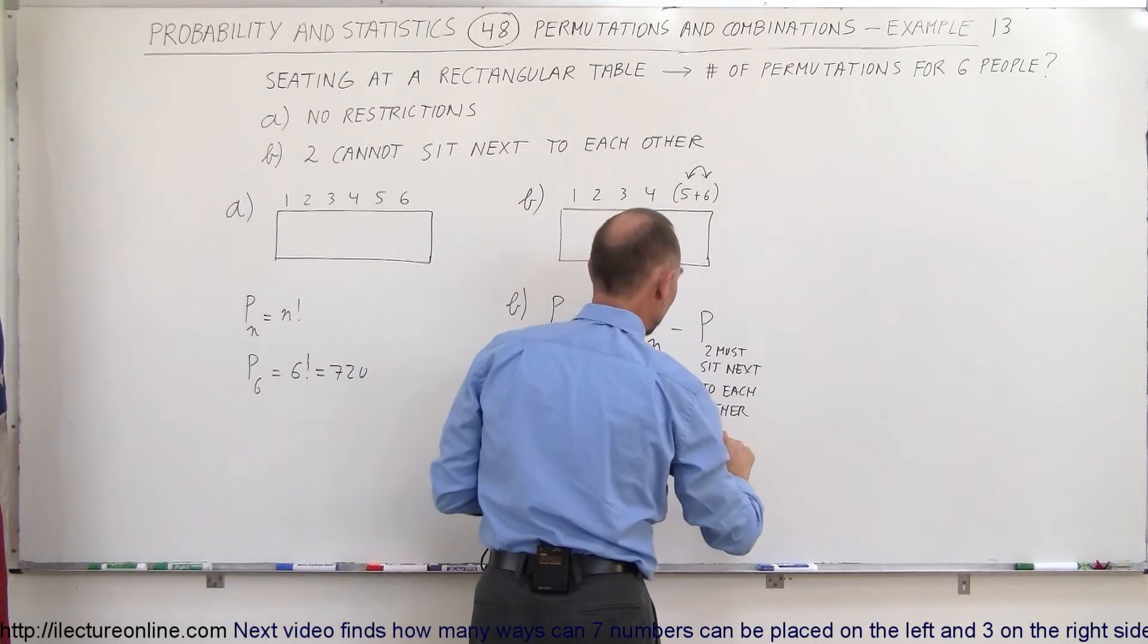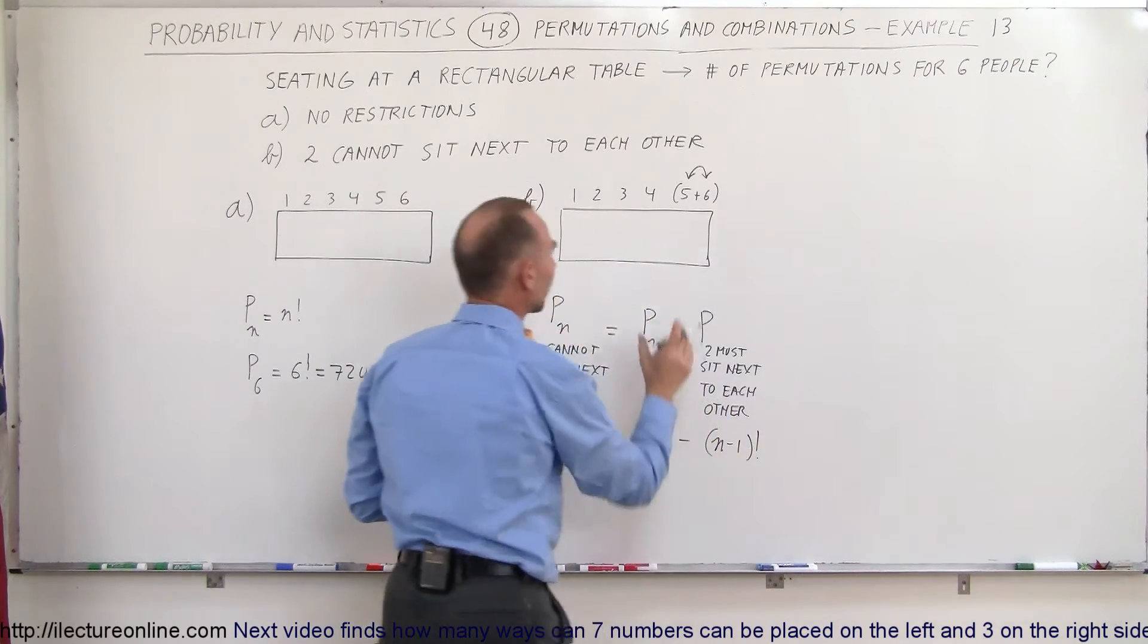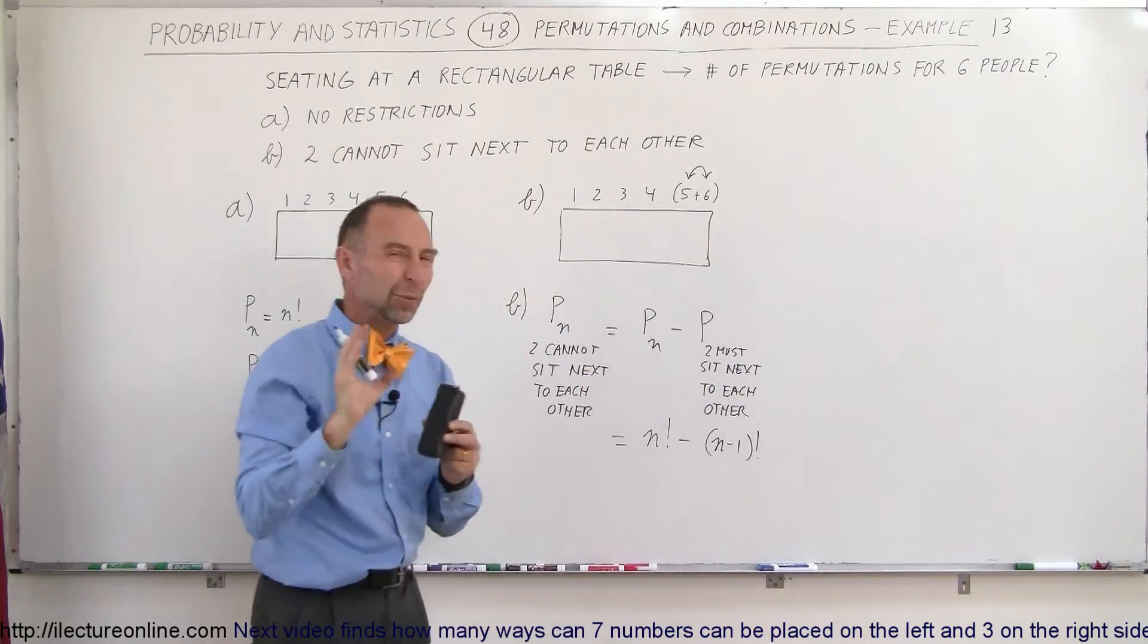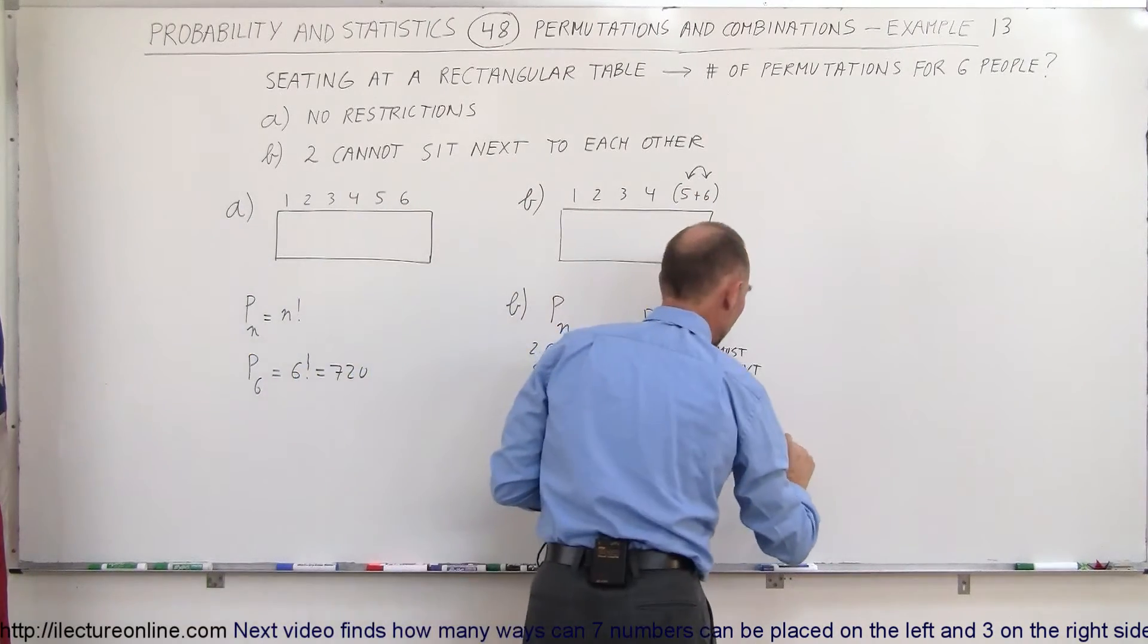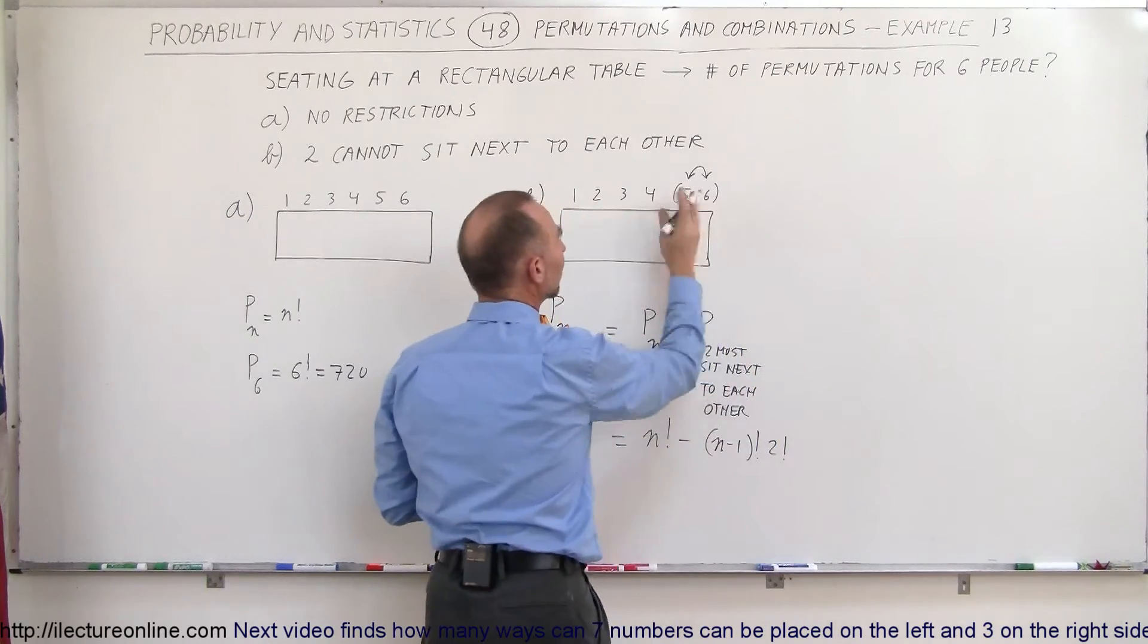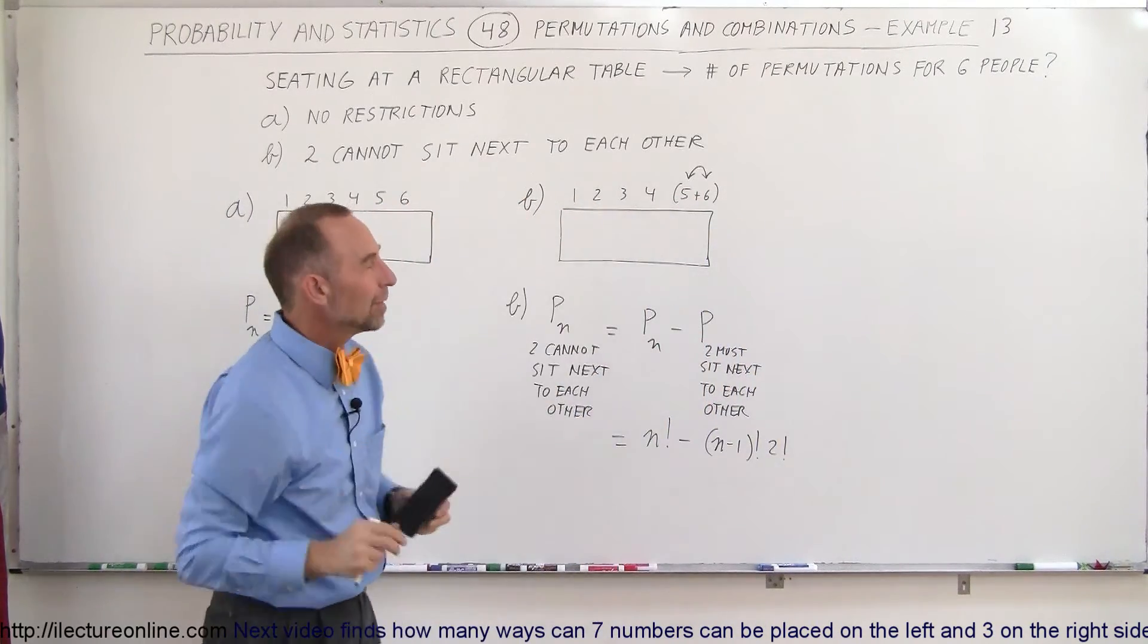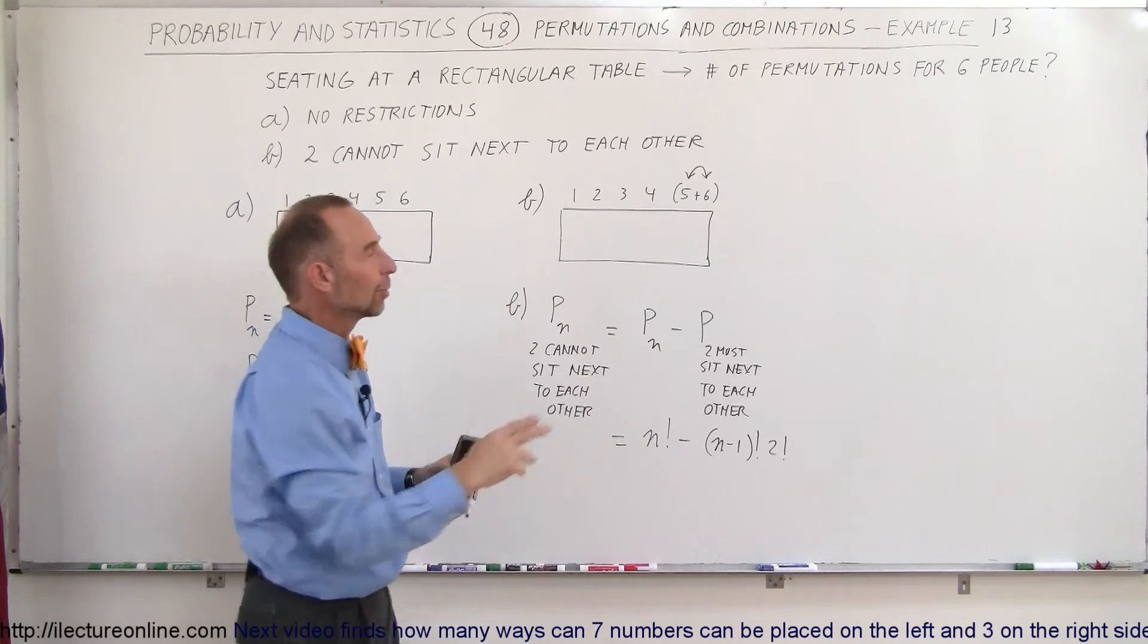So this would be equal to n minus one factorial, because two people becomes one, but then we have to multiply that times two factorial, because that one so-called one person could still be switched around with the other person.